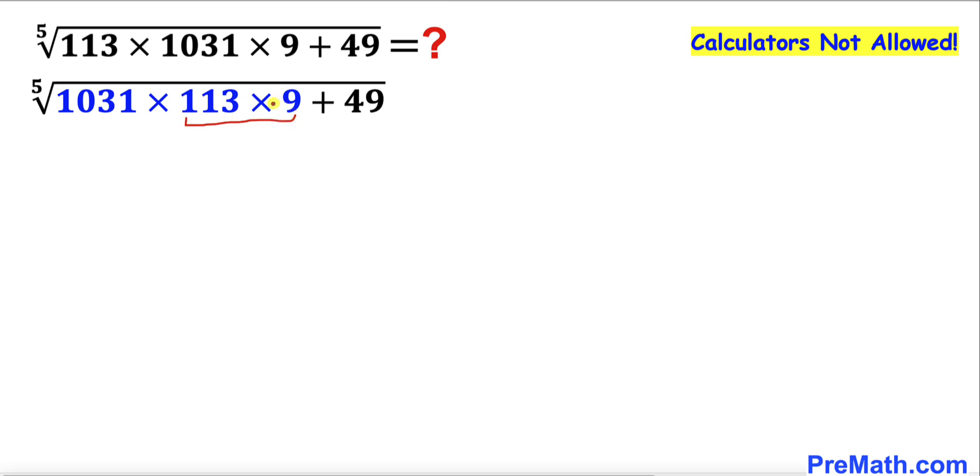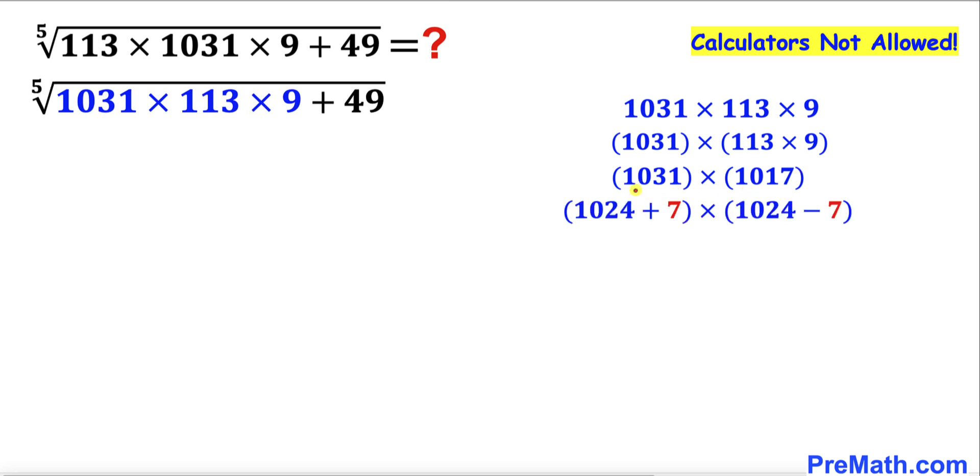Here I have rearranged these numbers. I put these two numbers 113 times 9 together. Now let's focus on these numbers. Here I have copied them down and chunked these numbers. If we multiply 113 times 9 we are going to get 1017.